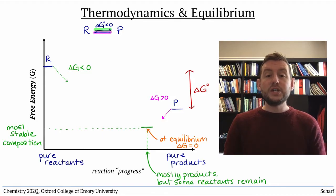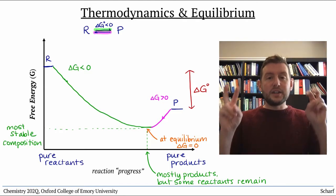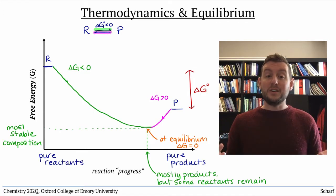Graphically, delta G without the naught is the slope of this curve. So, what's the relationship between this instantaneous delta G and the constant delta G naught?